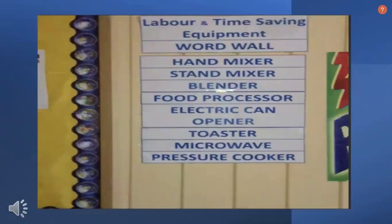What is a word wall? A word wall is a literacy tool composed of an organized collection of words, which are displayed in large visible letters on the wall, a bulletin board, or any other display surface in the classroom. In this case, the organized collection of words are labor and time saving equipment — for example, a microwave, pressure cooker, toaster, and electric can opener. These are all examples of labor and time saving equipment that were discussed and learned in the lesson.